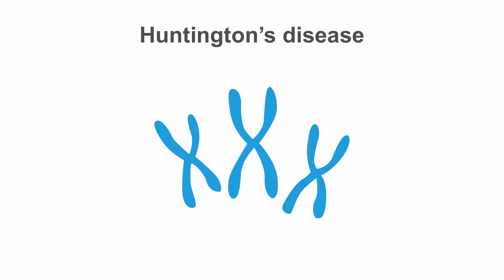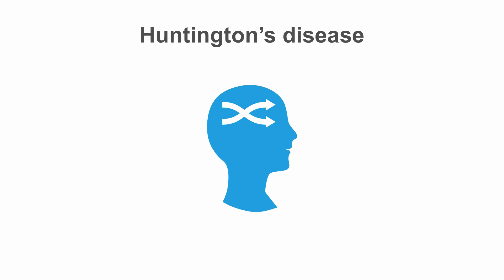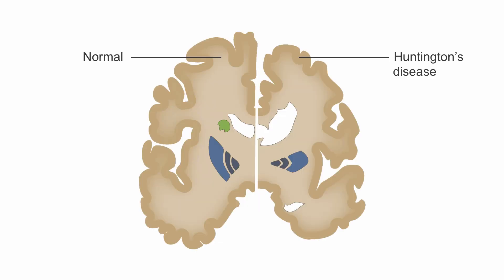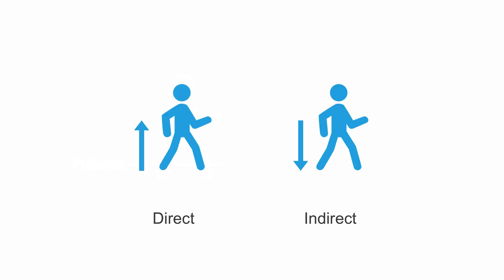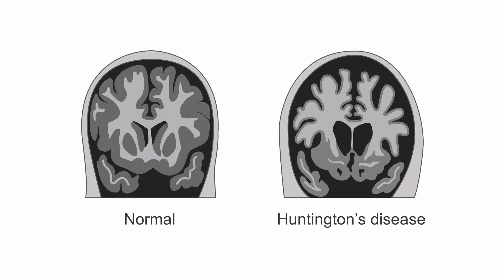To best illustrate hyperkinetic movement disorders, we can look at Huntington's disease. It is a genetic disorder with an insidious onset characterized by involuntary choreiform movements and cognitive changes with psychiatric manifestations. The pathology involves the loss of neurons in the caudate and putamen, leading to a favoring of the direct pathway which facilitates motor activity of the cortex. Loss of GABA inhibition in the globus pallidus results in increased cortical motor enhancement and chorea. The loss of neurons in the caudate and putamen can be readily seen on CT scan or MRI.